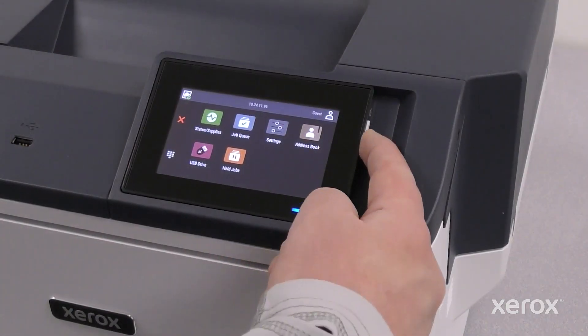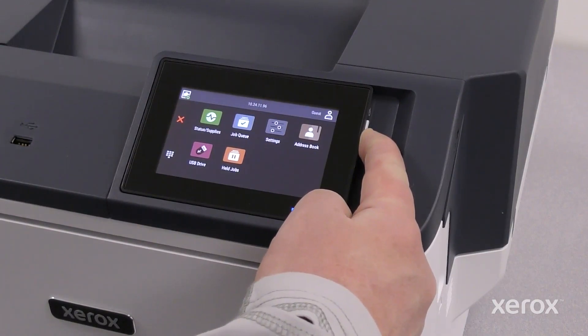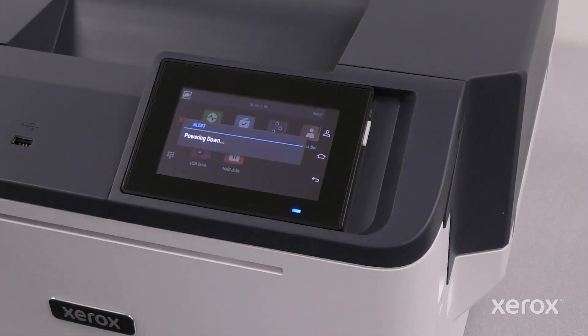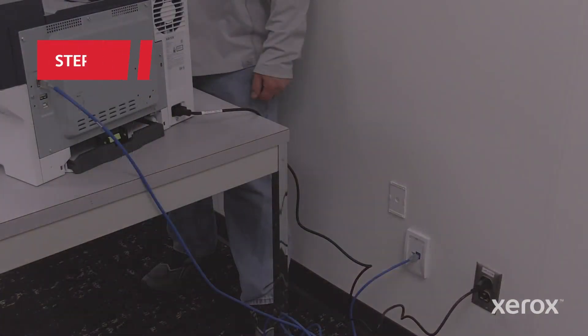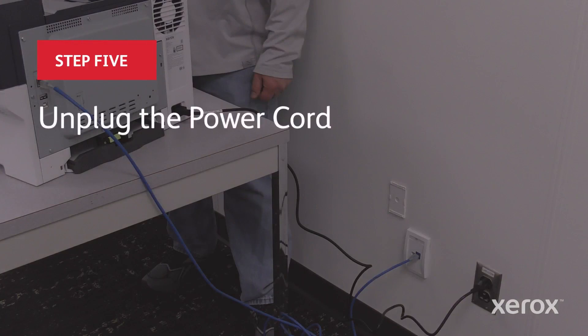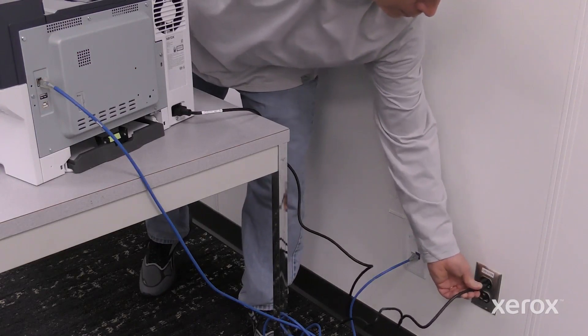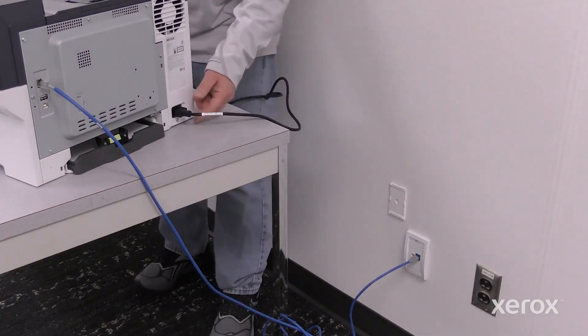Press and hold the power button for five seconds to power off the printer. To prevent personal injury, unplug both ends of your power cord.